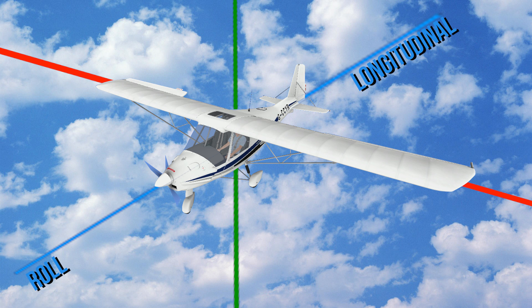The ailerons on both wings are used to control the aircraft around this axis. The lateral axis is where we pitch around. The elevator on the horizontal stabiliser causes the aircraft's nose to pitch up and down around this axis.